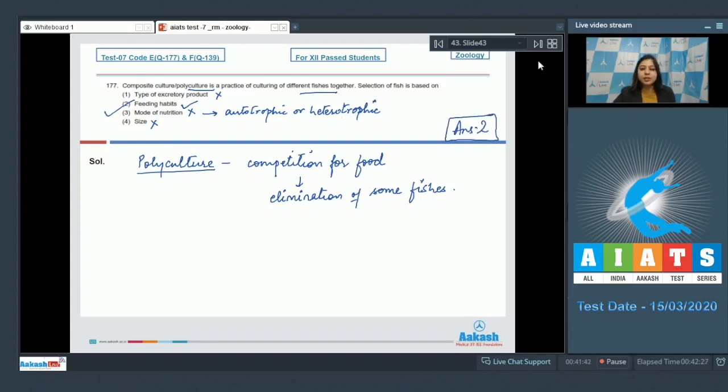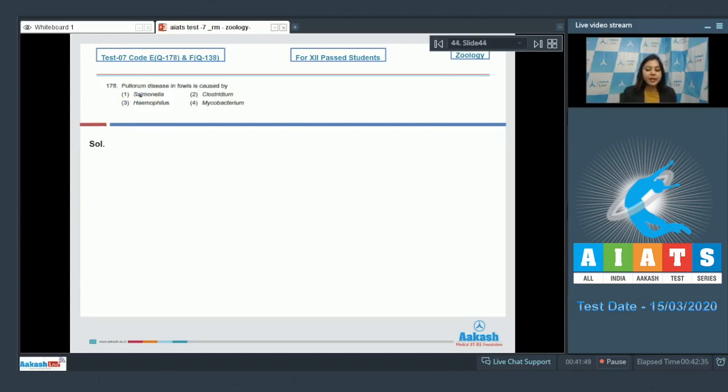Moving on to the next question—178: Pulorum disease in fowls is caused by... Number one, Salmonella—this is the correct answer as Salmonella pulorum causes pulorum disease. Clostridium is incorrect as Clostridium causes tetanus.